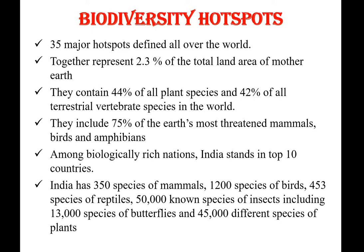Among biologically rich nations, India stands in the top 10 countries. India has 350 species of mammals, 1,200 species of birds, 4,053 species of reptiles, 50,000 species of insects including 13,000 species of butterflies only, and 45,000 different species of plants.